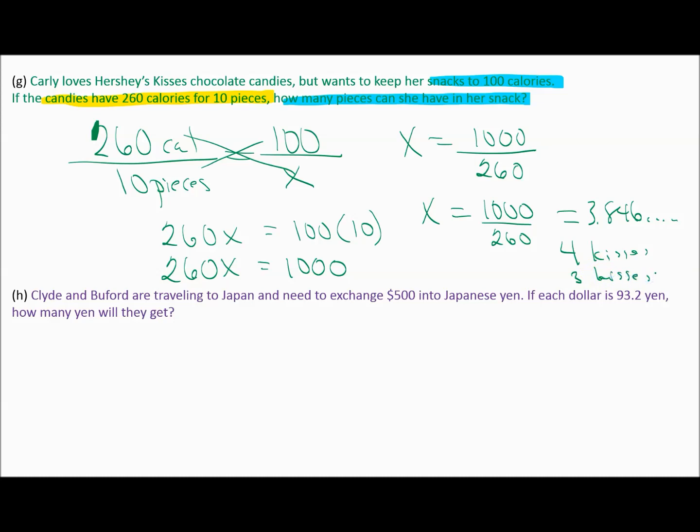Now let's think about what we're trying to do. She says she wants to keep her snacks to 100 calories. If she rounds up to four Hershey Kisses, it's going to be over 100 calories. So she would have to round down in this case to only have three Hershey Kisses if she wants to keep it below 100. Now if she ate four, it would be just a little over 100. But if we're trying to meet her needs, she can have three Hershey Kisses for her snack.